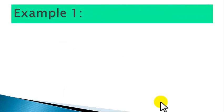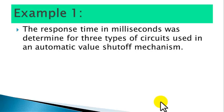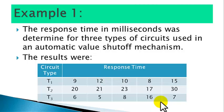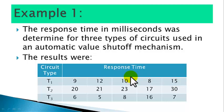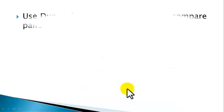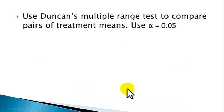Example 1: The response time in milliseconds was determined for three types of circuits used in an automatic valve shut-off mechanism. The circuit types representing the treatments are T1, T2, and T3, with response time values of 9, 12, 10, and so on. Use Duncan's multiple range test to compare pairs of treatment means using alpha equals 0.05.